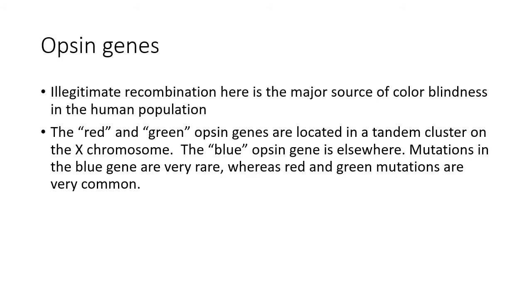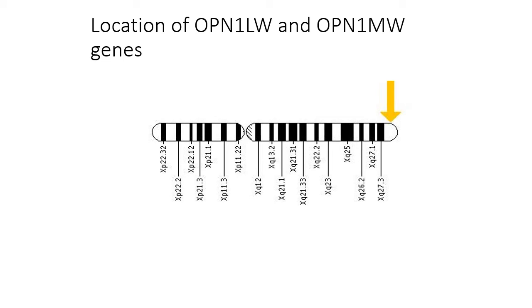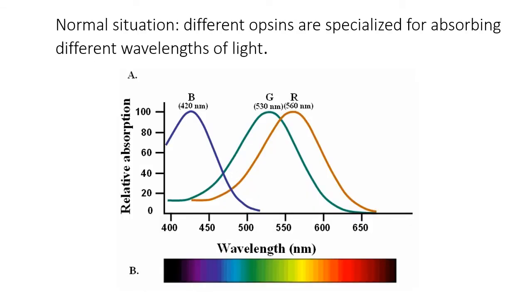Another very important example of illegitimate exchange in the human population involves the opsin genes. Illegitimate recombination here is a major source of colorblindness. The red and green opsin genes are pigments normally located in the eye, and their protein-coding portions are located in a tandem cluster on the X chromosome. The blue opsin is elsewhere. The red and green mutations are very common, as indicated by the yellow arrow on the X chromosome.